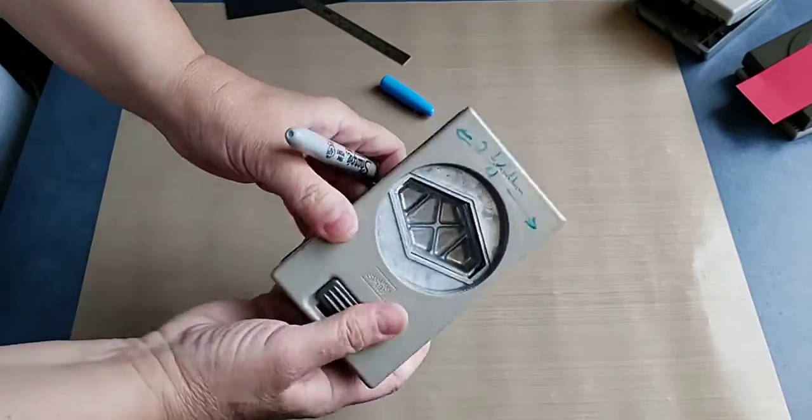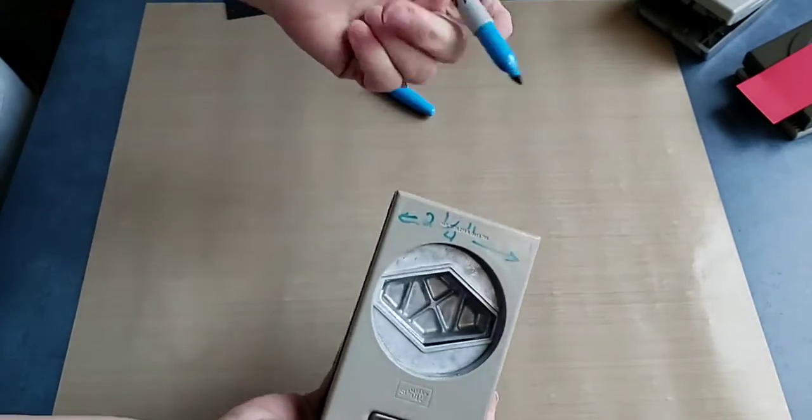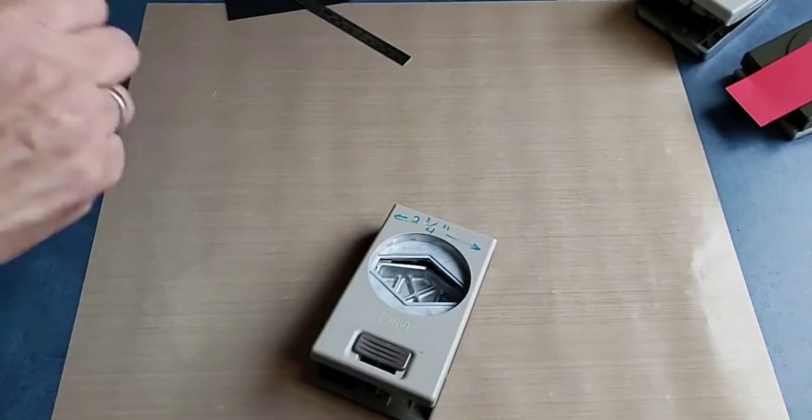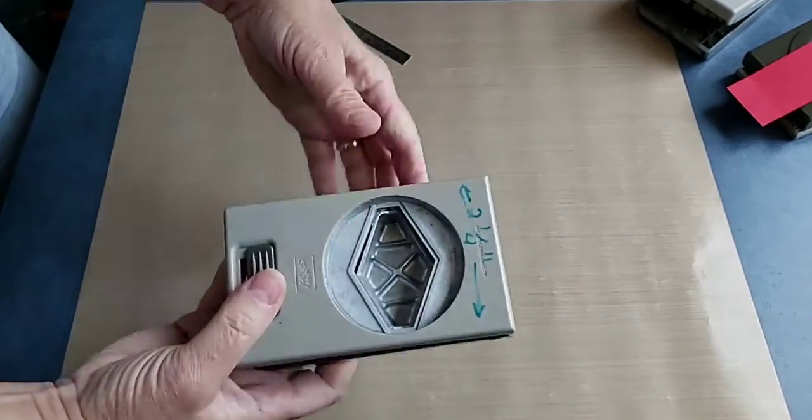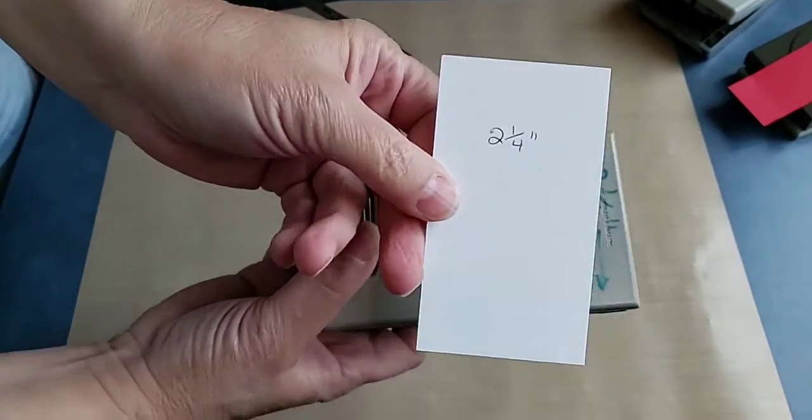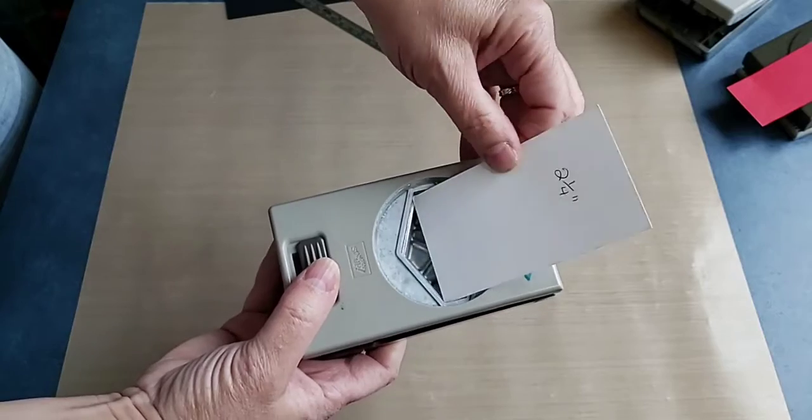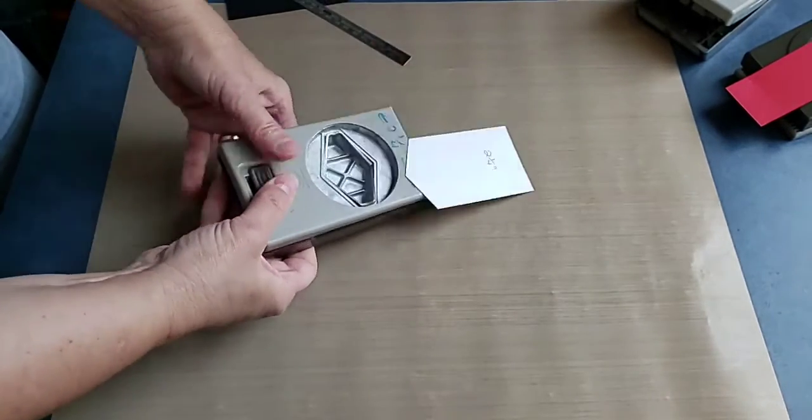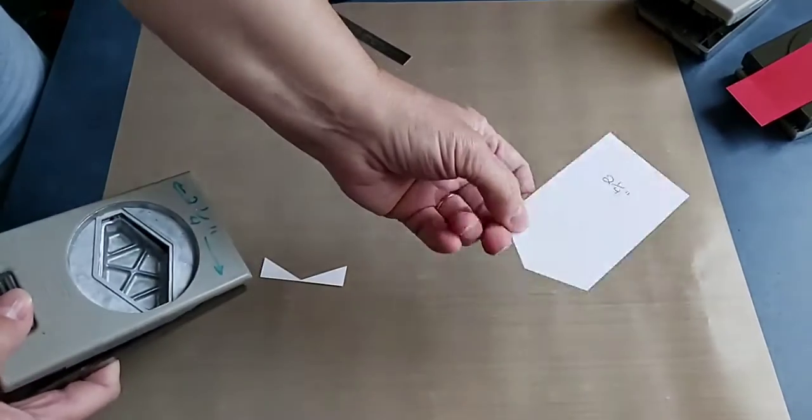So I just labeled that with a permanent marker. I am a lefty. My memory is not as good as it used to be, so I find it easiest just to label them. Now that I know that's two and a quarter, I have a piece of cardstock that's two and a quarter inches wide.